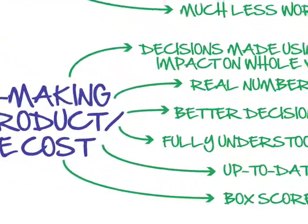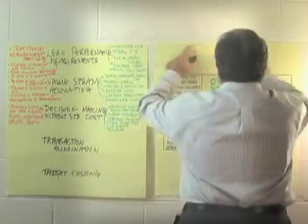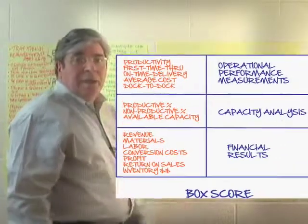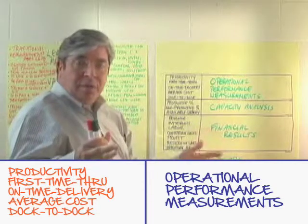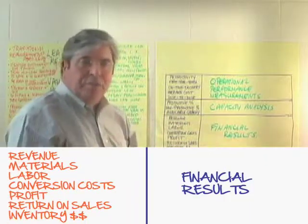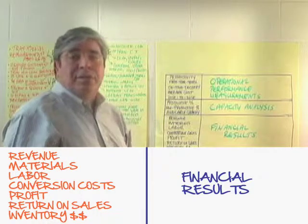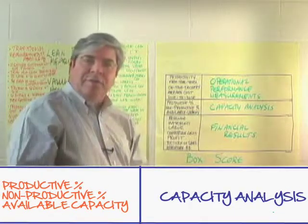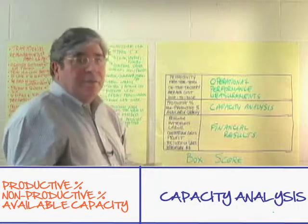We don't just look at financial information — we use what we call a box score. The box score is made up of three different pieces of information. At the top are the operational performance measurements for the value stream. At the bottom is the summary of the financial information — an income statement or cost statement that applies to the value stream, coming from value stream accounting each week.